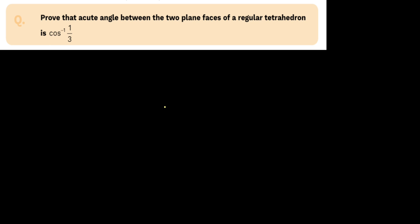This question is really special because along the way I am going to teach you many things which are very important for J-Advance. First of all, we want to calculate the acute angle between two regular faces of a tetrahedron.